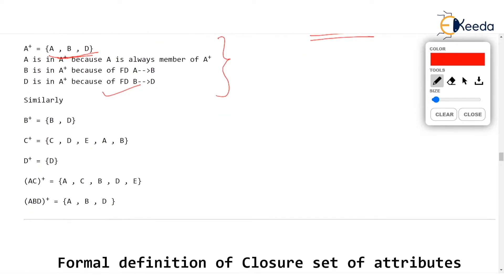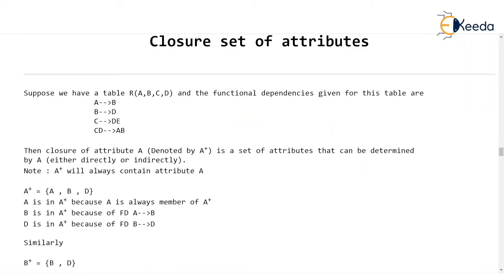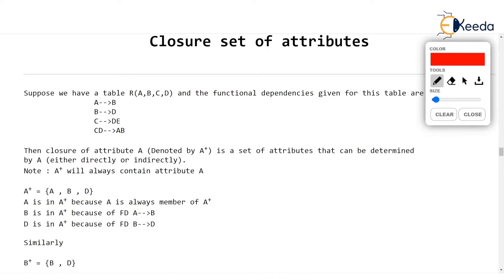Let's find out B+ now for this table. B+ means attribute closure of B. Attribute closure of B will surely contain B, because B determines B. From the dependency B determines D, B actually determines D. So D comes into the closure.